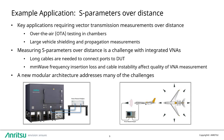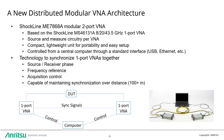A new modular architecture from Anritsu addresses these types of applications by making a pair of independent one-port VNAs into the equivalent of remote ports on a fully reversing two-port VNA. This new distributed two-port VNA, the ME7868A, is based upon a pair of MS46131A one-port VNAs.